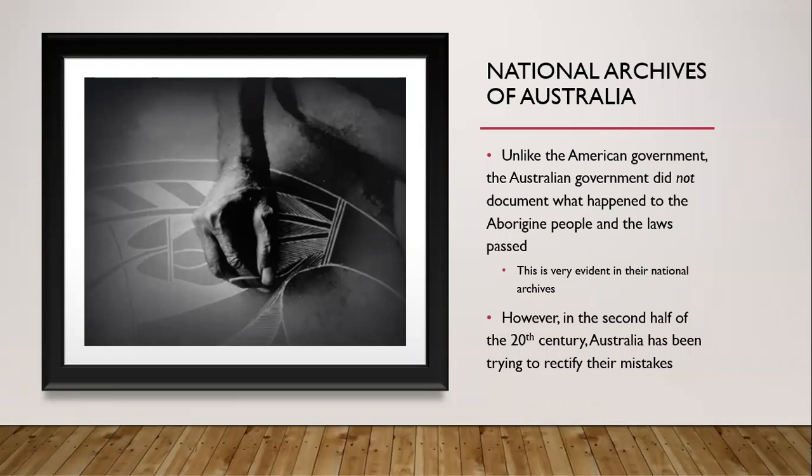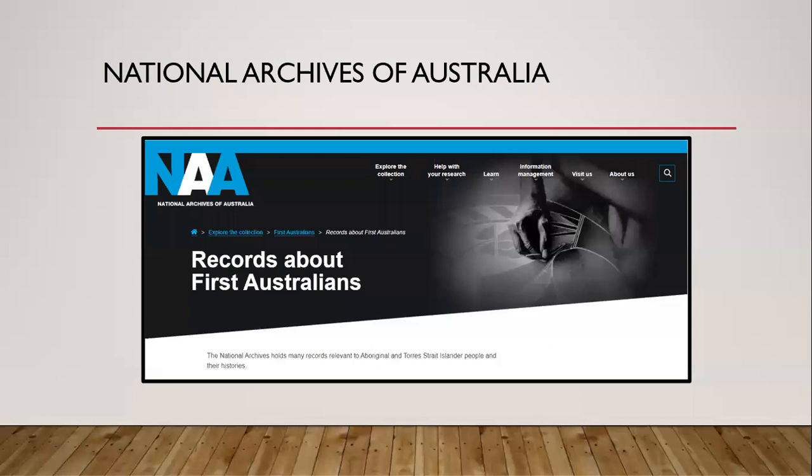Moving to the National Archives of Australia: unlike the American government, the Australian government did not document what happened to the Aborigine people and the laws that were passed. We can go in and find legislation and laws, but as far as documenting the Aborigines and the different laws passed — whether it was schooling or even the allowing of hunting Aborigine men, women, and children — it is very evident in the National Archives that they didn't document it. However, in the second half of the 20th century, we do see Australia trying to rectify their mistakes, and the National Archives of Australia do hold records relevant to Aborigines and the original First Australians. But compared to the North American government system, this archive is not nearly as complete, though still a useful tool.